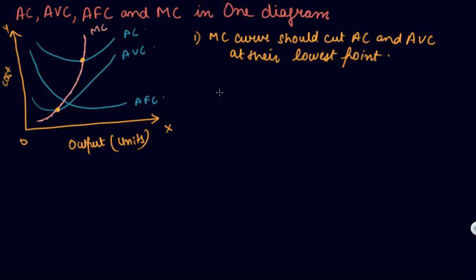We covered this in our previous video—the relationship between AC and MC. When AC is declining, MC declines faster than AC. Your MC is below AC, and MC declines faster than AC until AC stops declining.